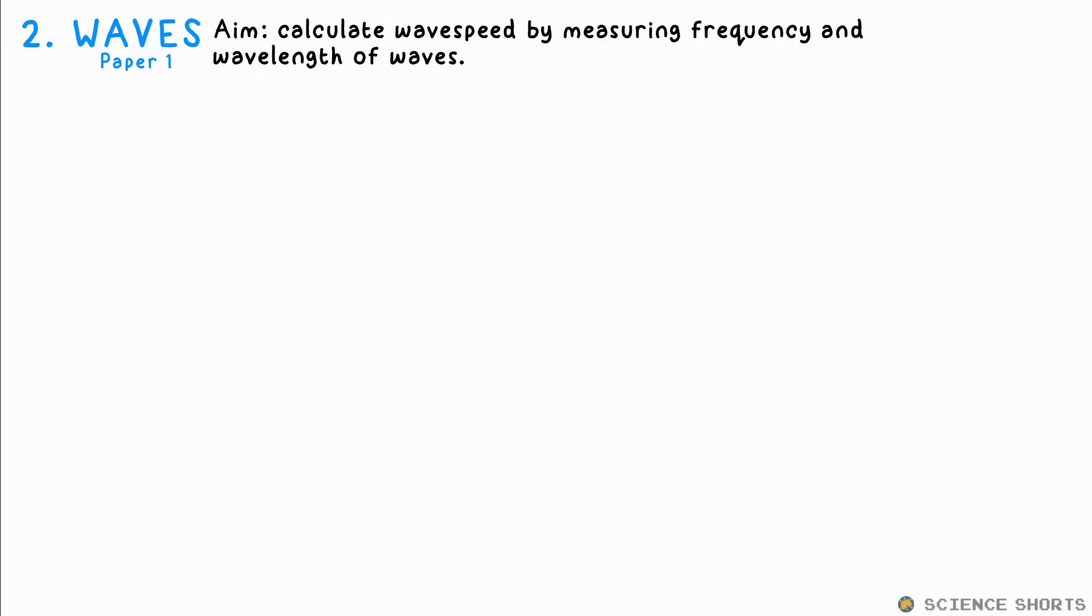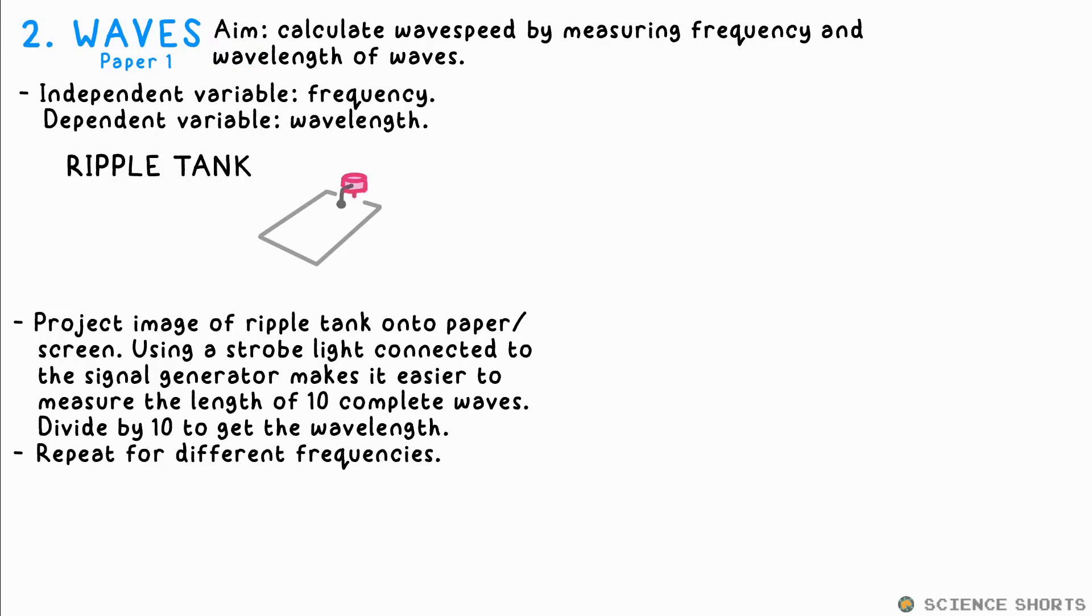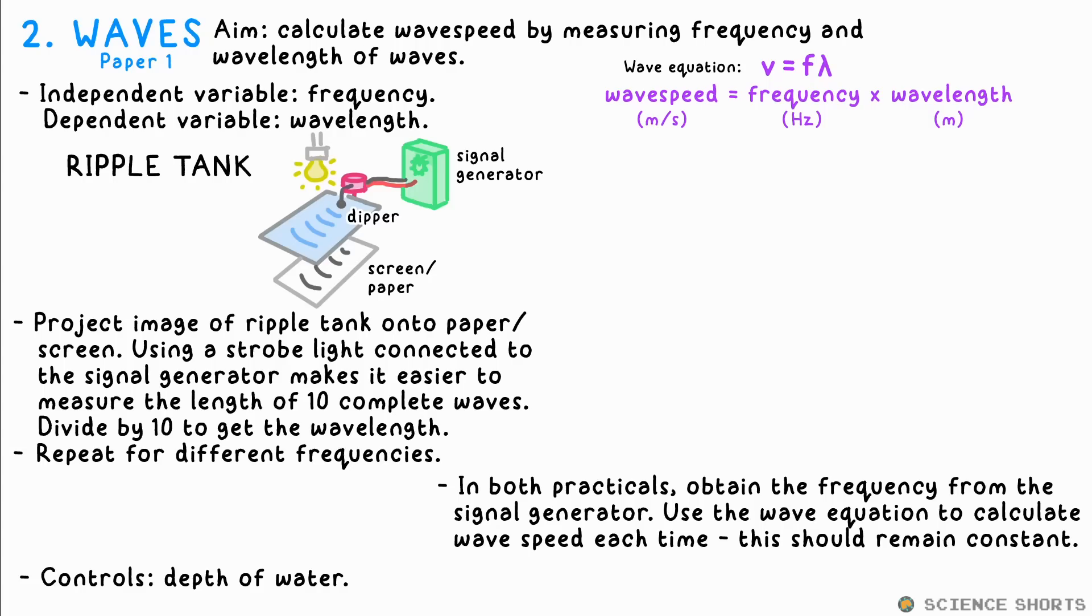Physics two, waves. A few different variations here. Using a ripple tank, you can just use light to project an image of the waves onto a screen or piece of paper. Using a ruler, you can measure the length of 10 waves, say, then divide by 10 to get the wavelength. This is much easier if the oscillator making the waves is also connected to a strobe light, so the waves appear stationary on the screen. The signal generator that's driving the oscillator should also tell you the frequency being used. If you change the frequency, the wavelength will change.